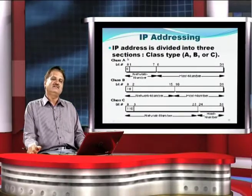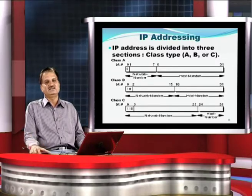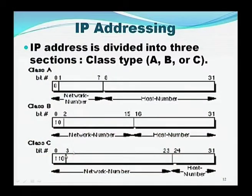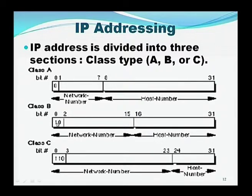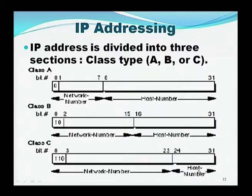An IP address is broadly divided into three different classes, each having its own segment: Class A, Class B, and Class C. In Class A, the first bit is permanently 0, bits 1 to 7 are for the network address, and bits 8 to 31 are for the host address. In Class B, the first two bits are fixed as 1-0, bits 2 to 15 are for the network address, and bits 16 to 31 are for the host address. In Class C, 3 bits are fixed as 1-1-0, bits 3 to 23 are for the network, and bits 24 to 31 are for the host number.